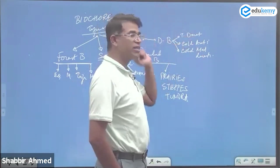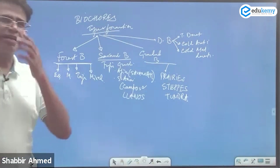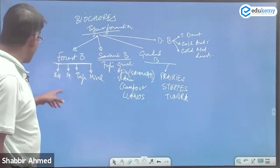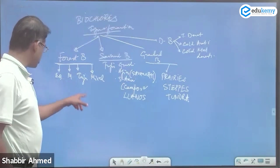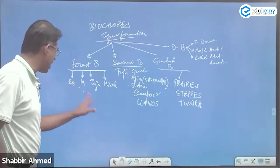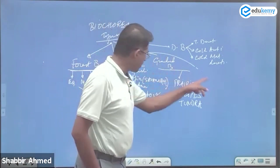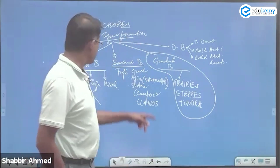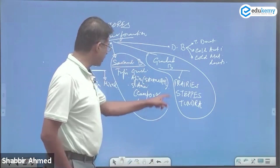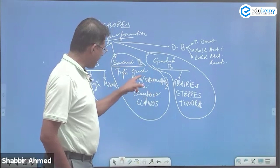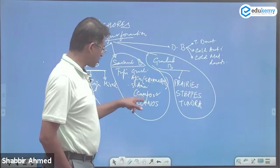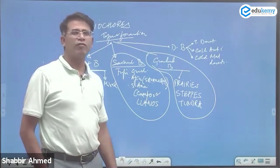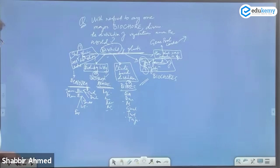They're asking you to take up any one biocore and explain. Don't take forest because it's hard to handle. The grassland biocore is good, or even savannah is fine. Savannah — the Africa one — and campos in Brazil and llanos in part of Venezuela.